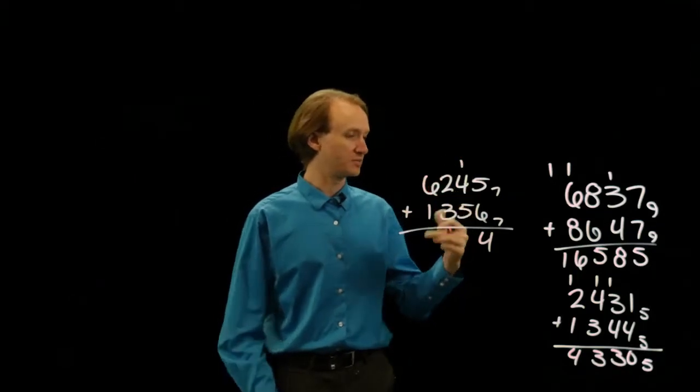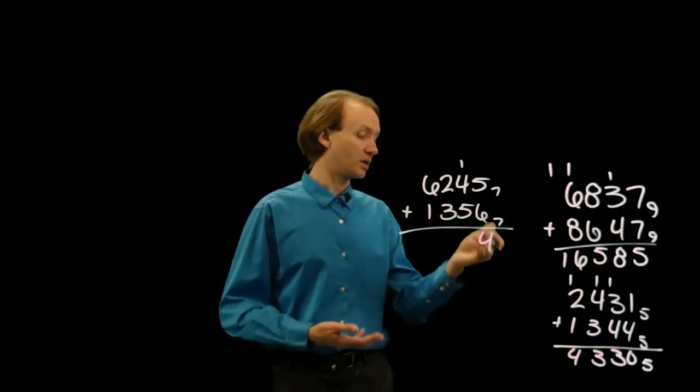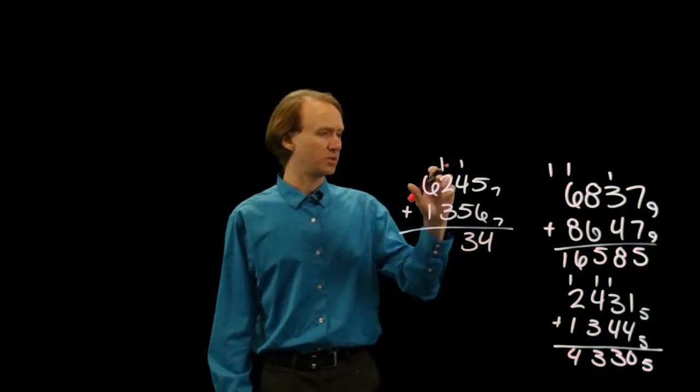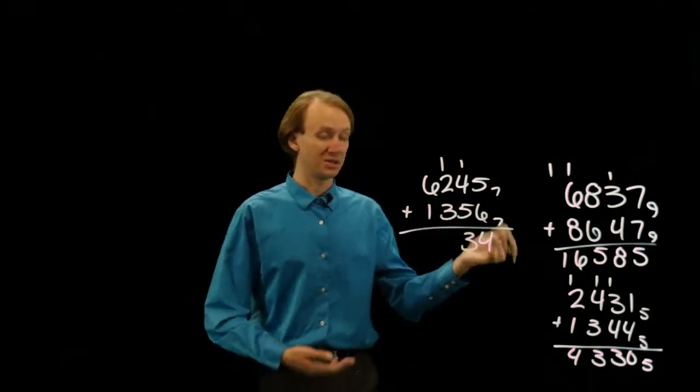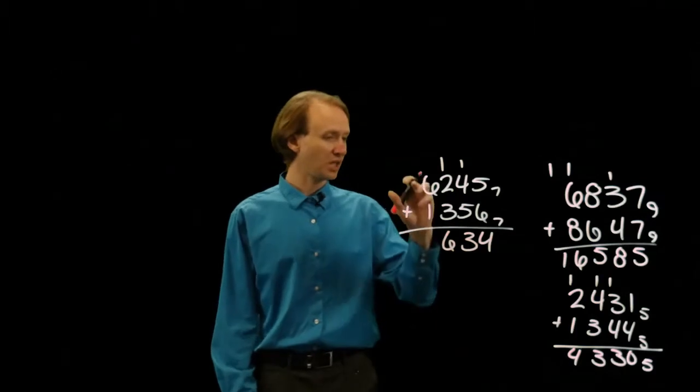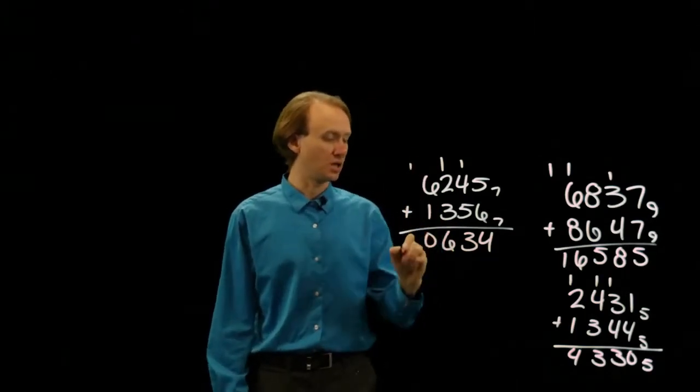1 plus 5 gives me 6 again. So, I'll borrow 1 from my 4. That will leave me with 3 and another 10. Now, I have 1 plus 2 plus 3 is 6. 6 is less than 7, so I don't have any carrying. Then, 1 plus 6 gives me 7, which is a 10.